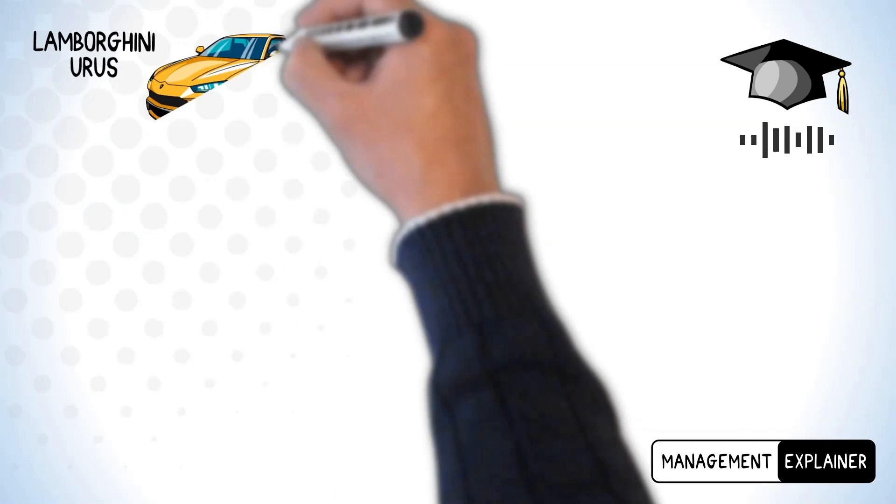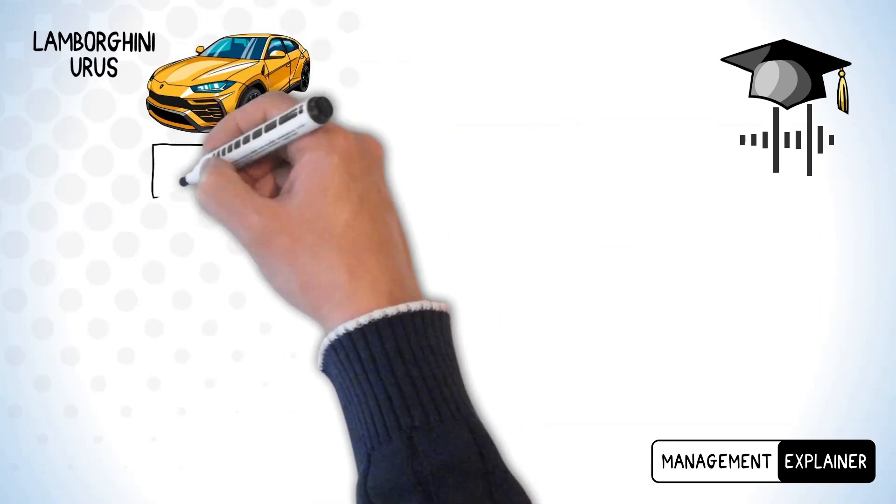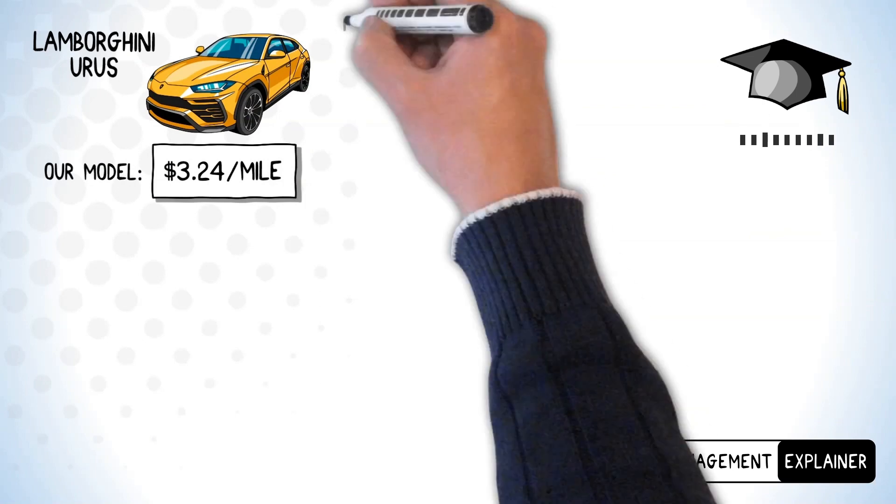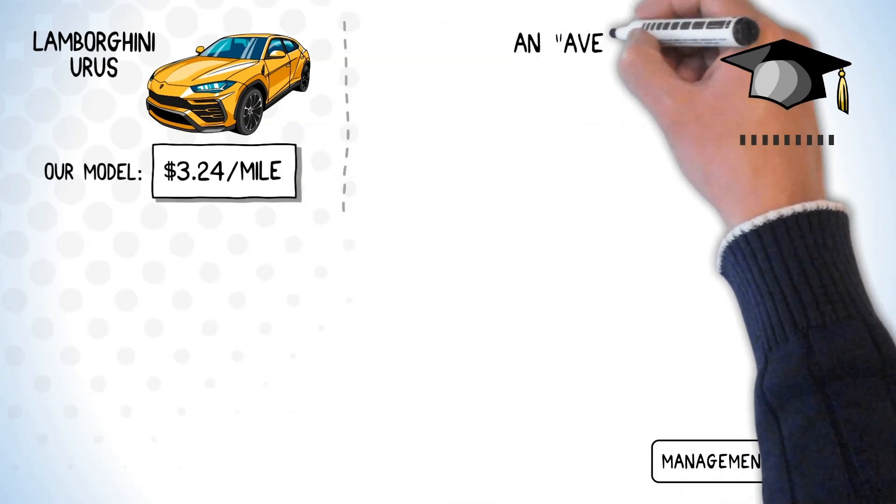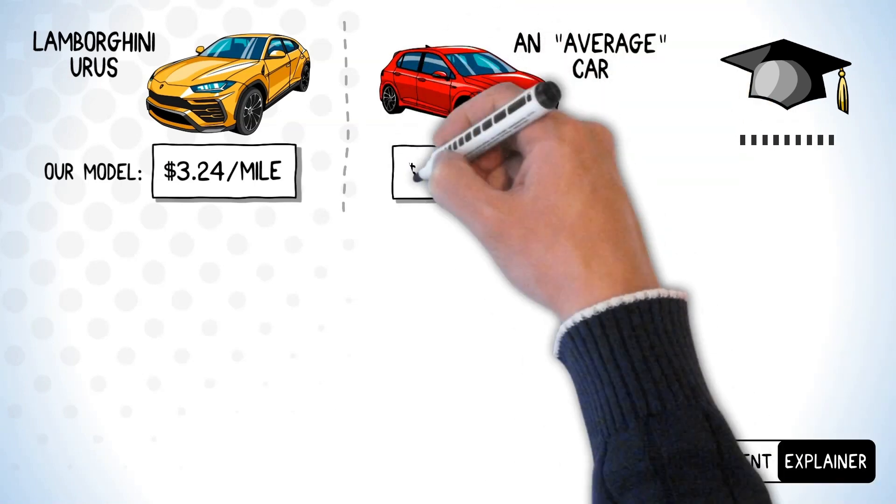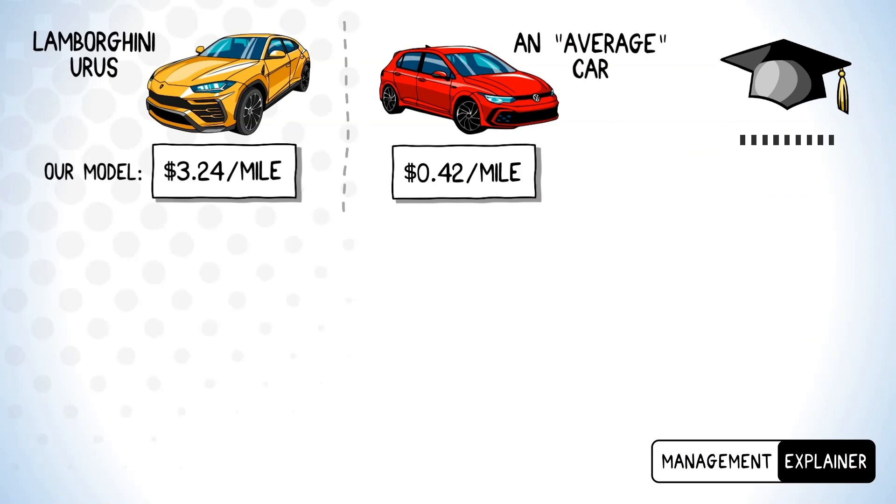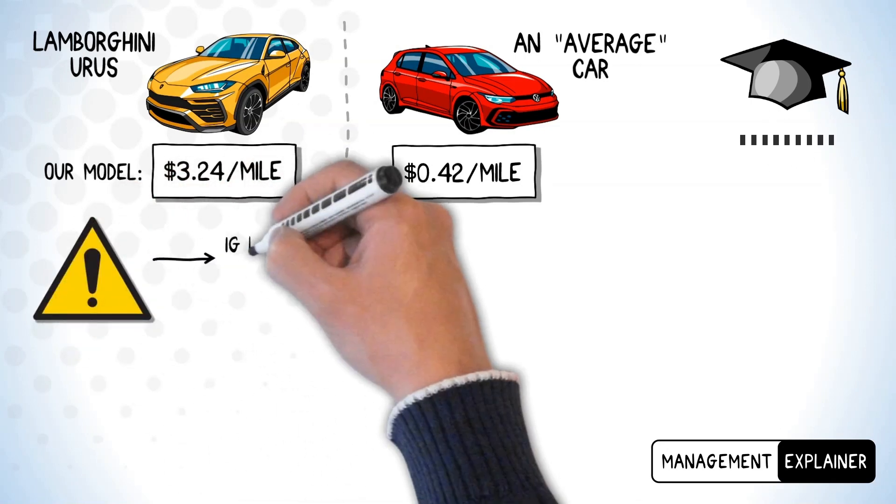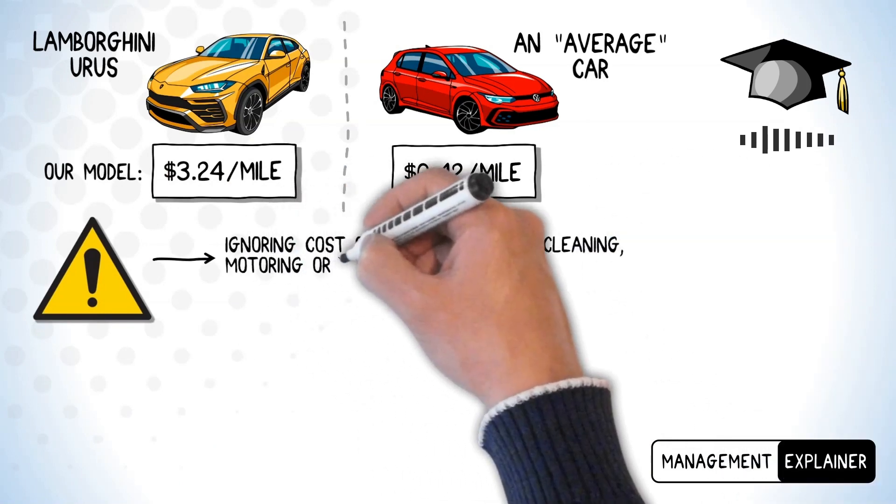This is all really nice, but we do need to put these numbers into perspective a little bit. How much it really costs to drive a Lamborghini becomes clear if we compare our numbers to the cost per mile of driving an average car. A plausible model I've found puts this in the region of 42 cents per mile. So yes, it's expensive to drive a Lamborghini at $3.24 per mile, which equates to roughly £2.66 in UK money.